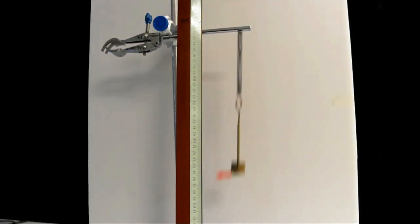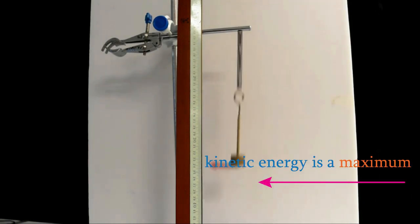The kinetic energy peaks just as the length of the spring reaches its equilibrium length. After that, the speed decreases, so the kinetic energy goes down. Overall, the potential energy increases as the kinetic energy decreases, and vice versa.